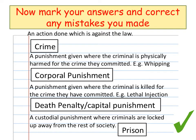Grab a different coloured pen and make sure you've got each one of these answers right. An action done which is against the law is a crime. A punishment given where the criminal is physically harmed for the crime they have committed, for example whipping, is corporal punishment. A punishment given where the criminal is killed, for example lethal injection, is either the death penalty or capital punishment. Remember the difference: corporal punishment is harming someone but not killing them; capital punishment is killing them.